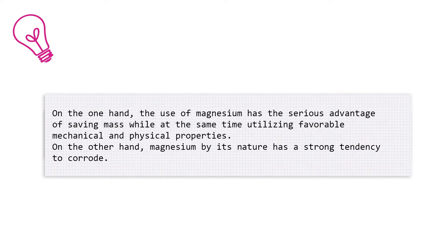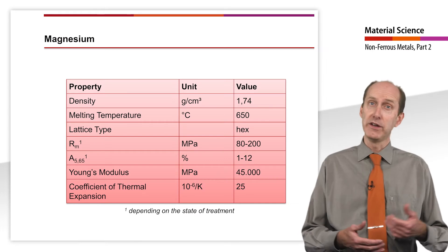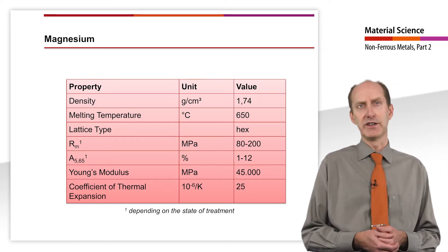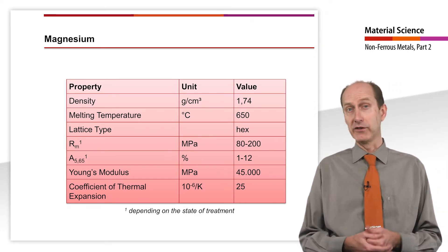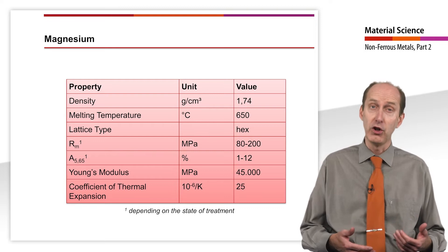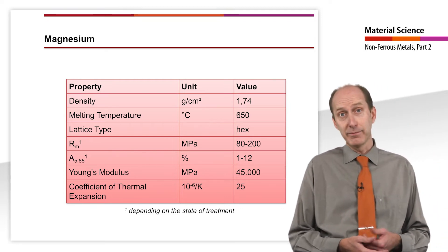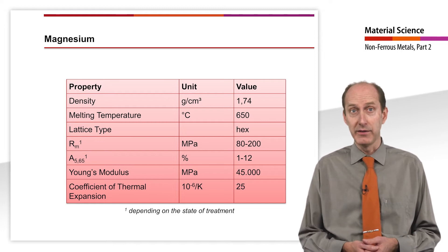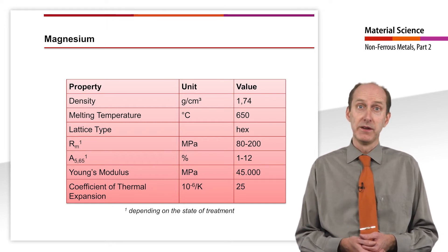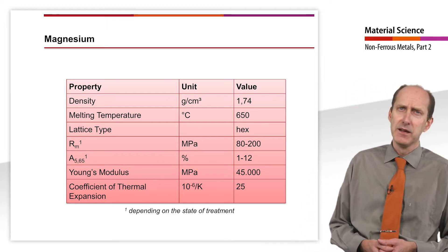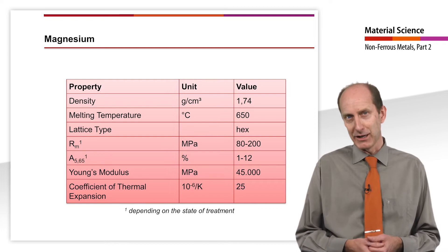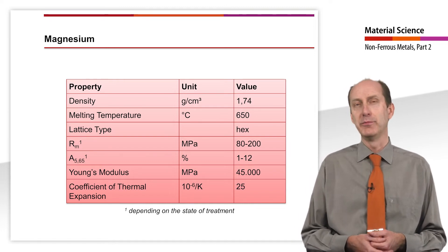On the other hand, magnesium by its nature has a strong tendency to corrode. Due to environmental conditions such as exposure to aggressive media, for example salt on the roads in winter, and exposure to air pollution, for example in the form of sulfur dioxide, people are still very skeptical about the use of magnesium.